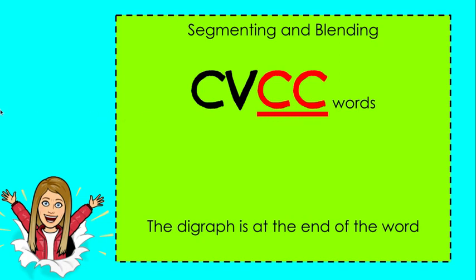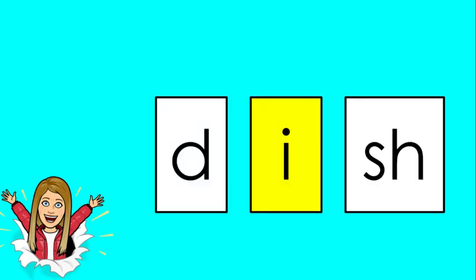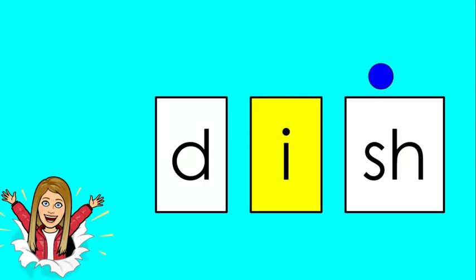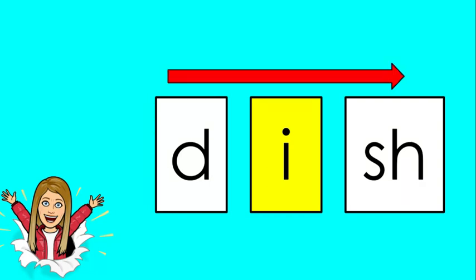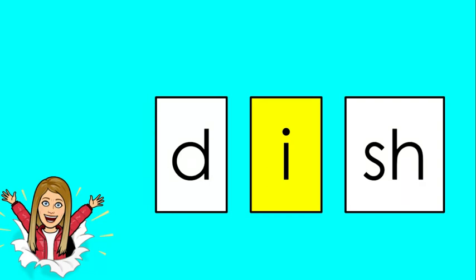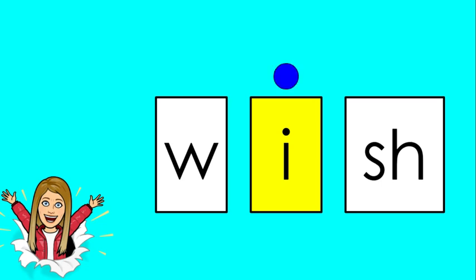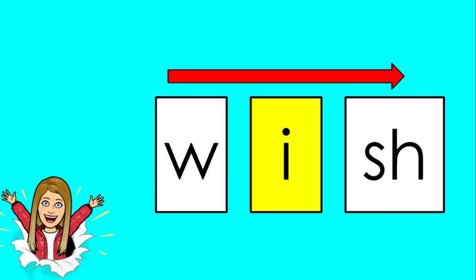Here we go. D, I, SH — dish. W, I, SH — wish.